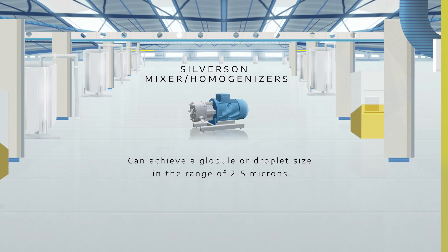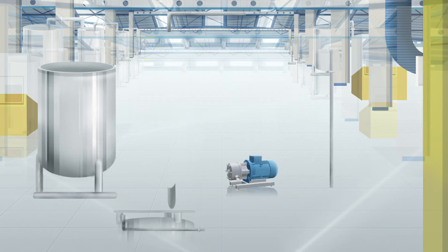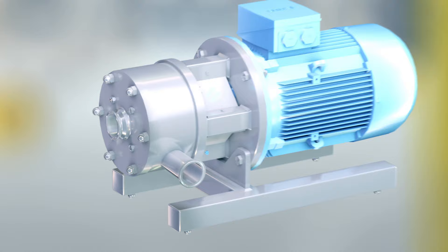Silverson mixer homogenizers can achieve a globule or droplet size in the range of 2-5 microns. Finer results down to 0.5 microns can be obtained depending on the ingredient type and formulation. This degree of homogenization is sufficient for the vast majority of products.